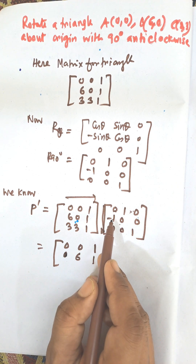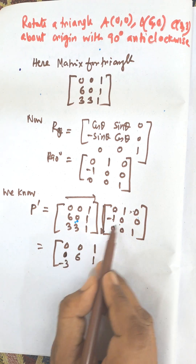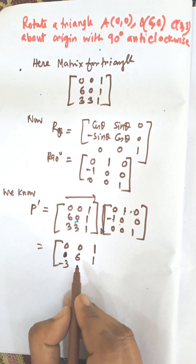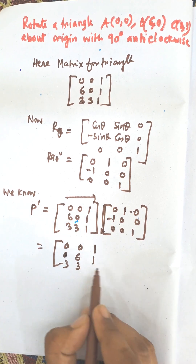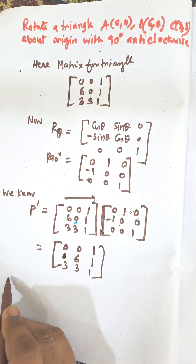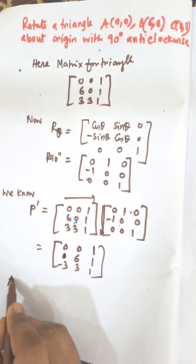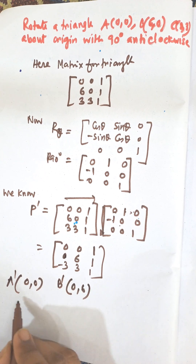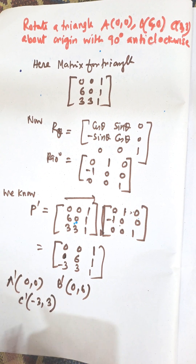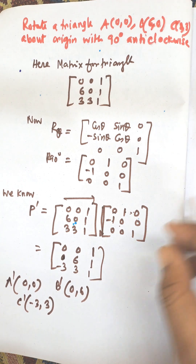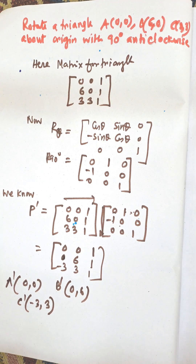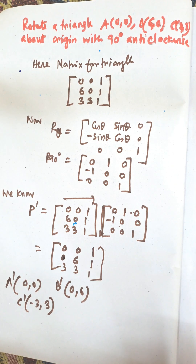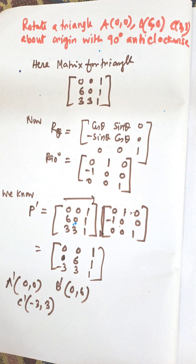The result gives minus 3 and 3. So the new points after rotation are: A' equals (0,0), B' equals (0,6), and C' equals (-3,3). This is the mathematical solution for rotation about origin with angle 90 degrees anti-clockwise. Thank you very much for watching this video, please share and subscribe. Thank you.